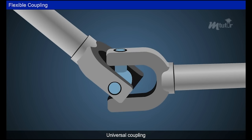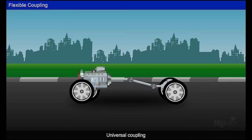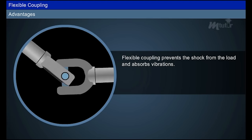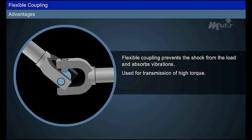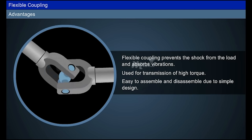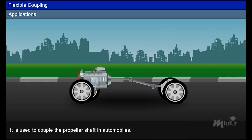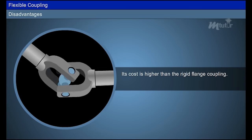Here comes the role of universal coupling with fork and center block arrangements. The power from the driving shaft is transmitted to the driven shaft through the forks via the center block. This flexible coupling is used in automobiles, especially in propeller shafts. It prevents shock from the load and absorbs vibrations, and is used for transmission of high torque. It is easy to assemble and disassemble due to its simple design. Applications of flexible coupling include coupling the propeller shaft in automobiles and connecting a motor and torque sensor with a workpiece in test fixtures to measure torque. Its disadvantages are that its cost is higher than rigid flange coupling and it requires more radial space.